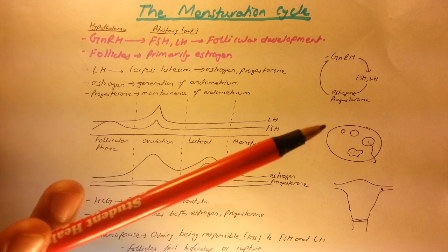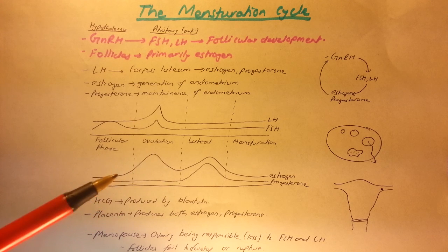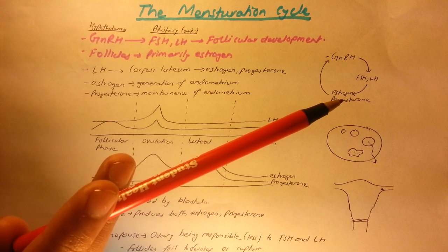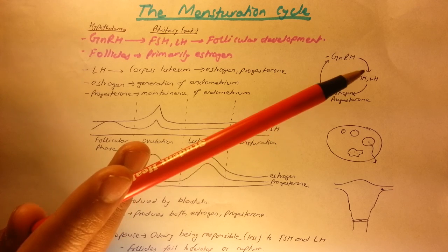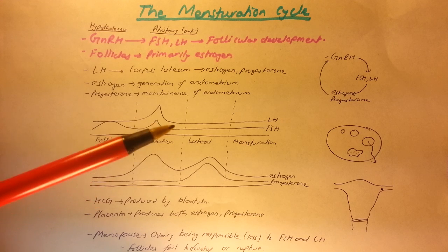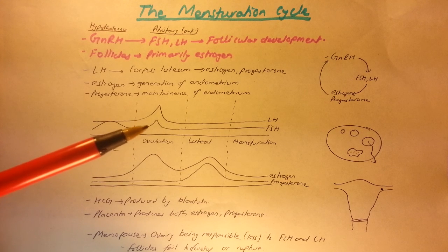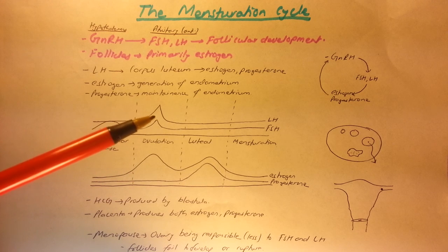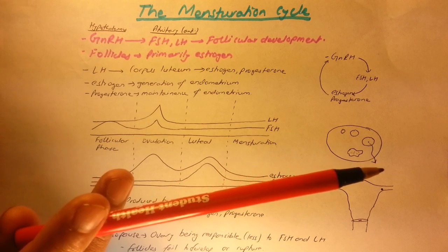As the follicles develop, they primarily secrete estrogen only — that's why we see a peak in estrogen but not progesterone during this phase leading up to ovulation. Normally, we'd expect this estrogen to cause a negative feedback on GnRH, producing less FSH and LH. But something unusual happens during the ovulation phase: instead of causing FSH and LH to decrease, there is a spike — the production of these two hormones actually increases. This surge in luteinizing hormone causes the developed follicle to rupture and the egg is released.